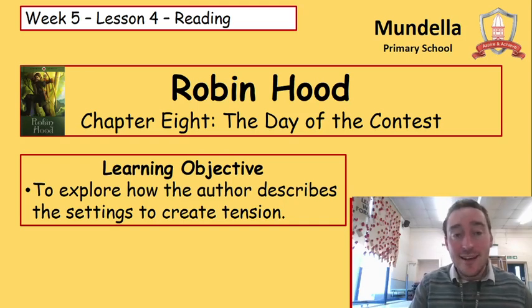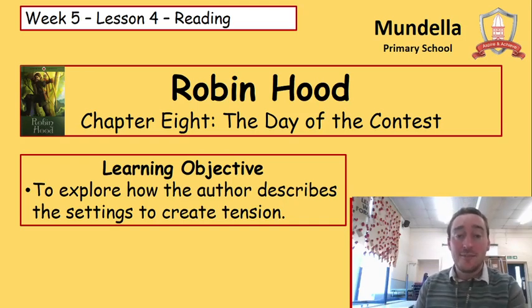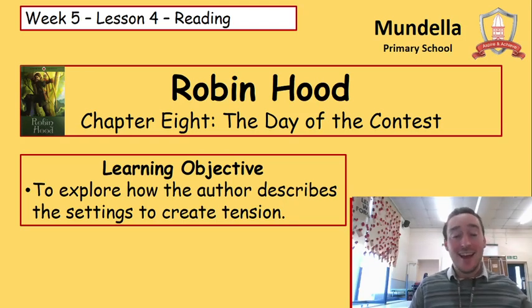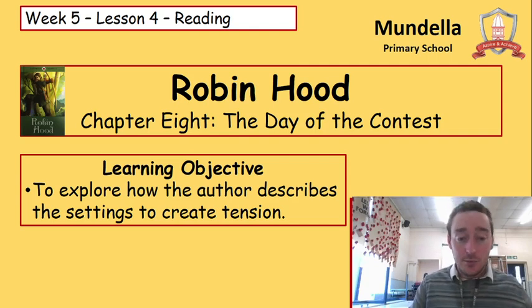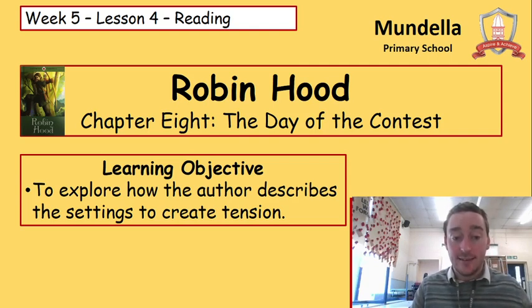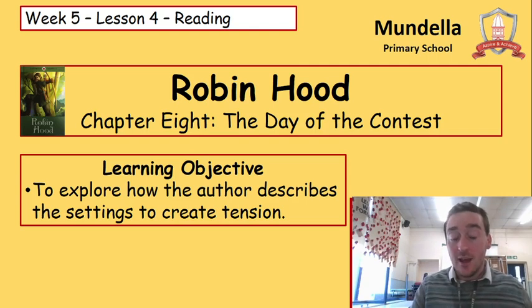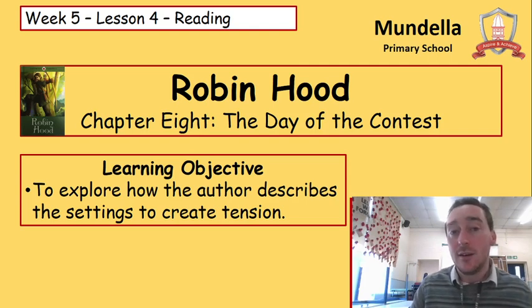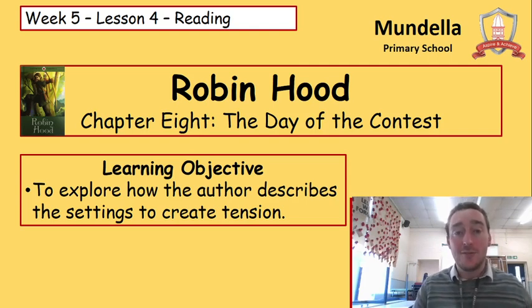Hello Year Three and welcome to lesson four this week of reading. We're moving on today to chapter eight, which is the day of the contest. It's all going to happen. Our learning objective is to explore how the author describes the settings to create tension. Get the date down into your book and that learning objective, then unpause the video and we'll have a look at the Robin Hood recap.